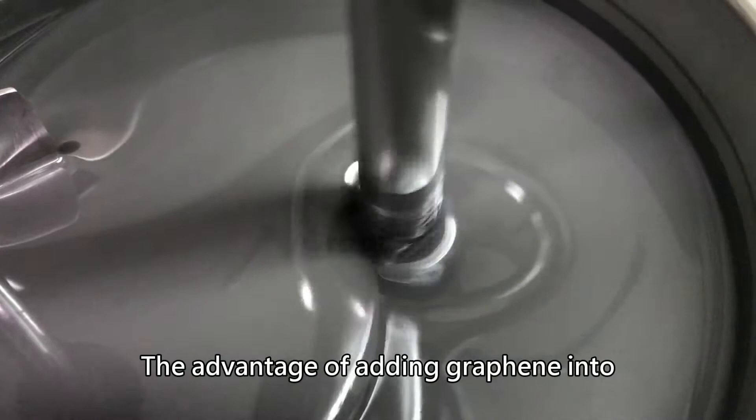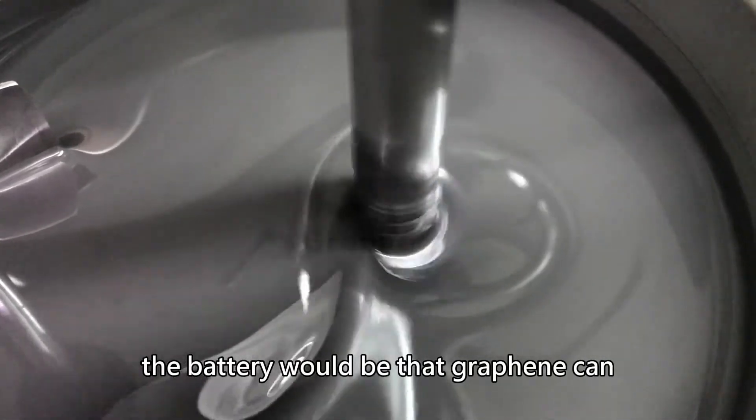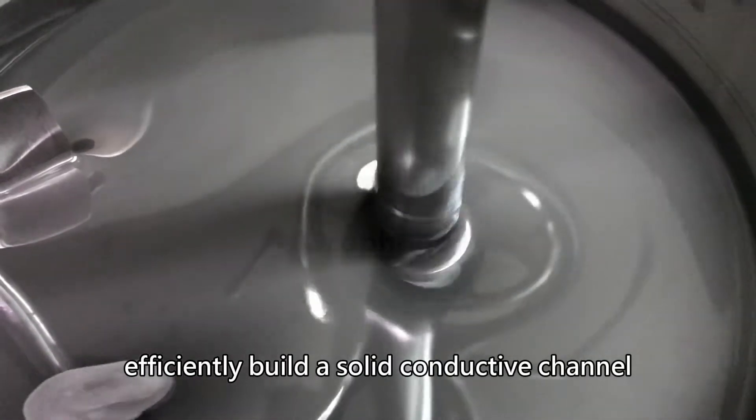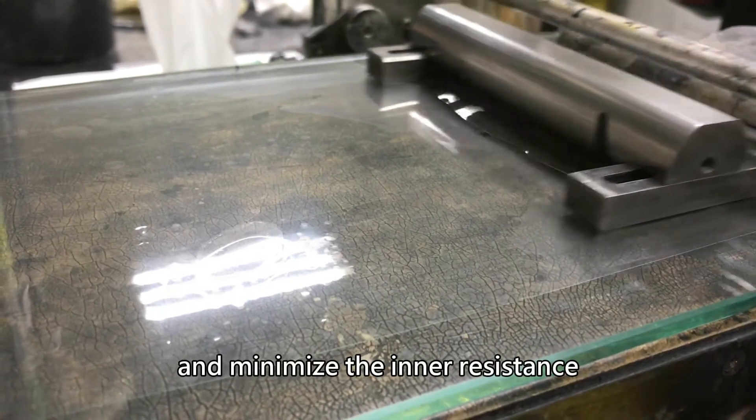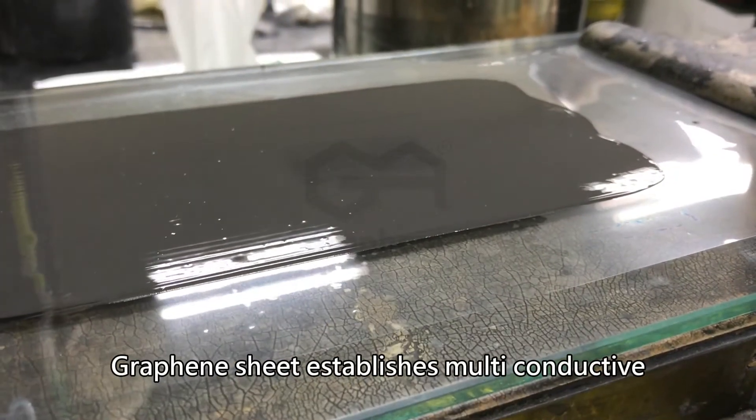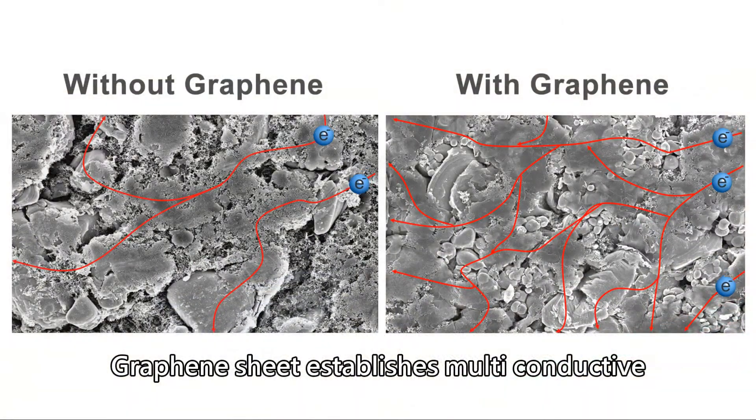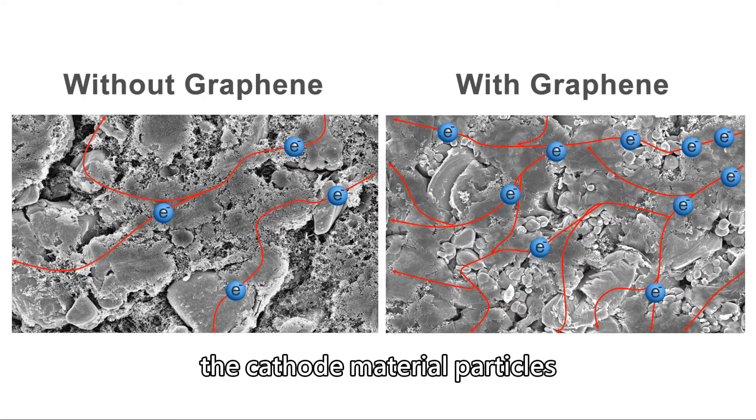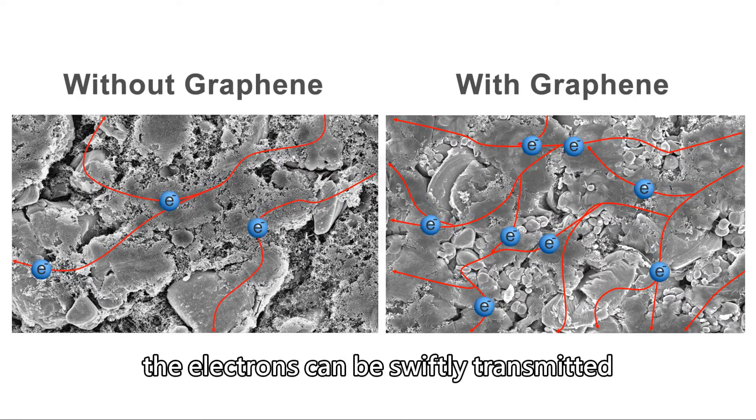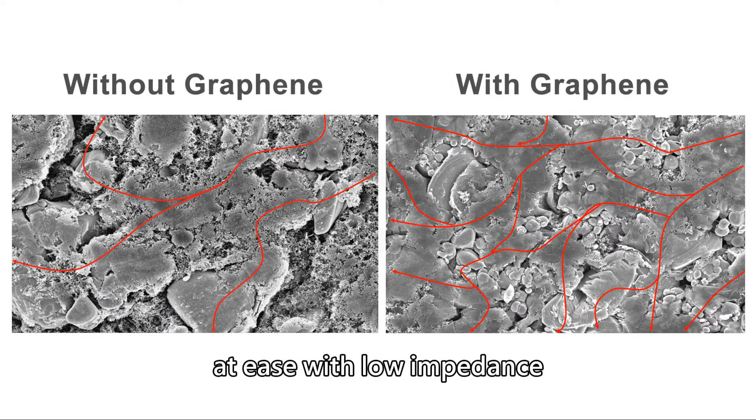The advantage of adding graphene into the battery would be that graphene can efficiently build a solid conductive channel and minimize the inner resistance. Graphene sheet establishes multi-conductive networks connecting between the cathode material particles. Afterwards, the electrons can be swiftly transmitted at ease with low impedance.